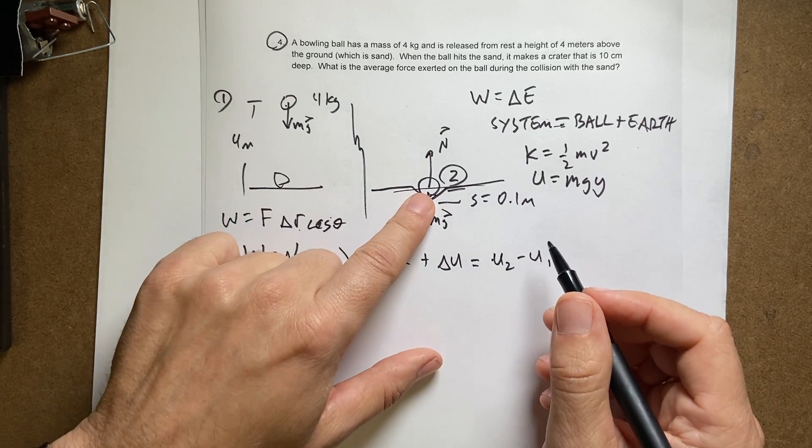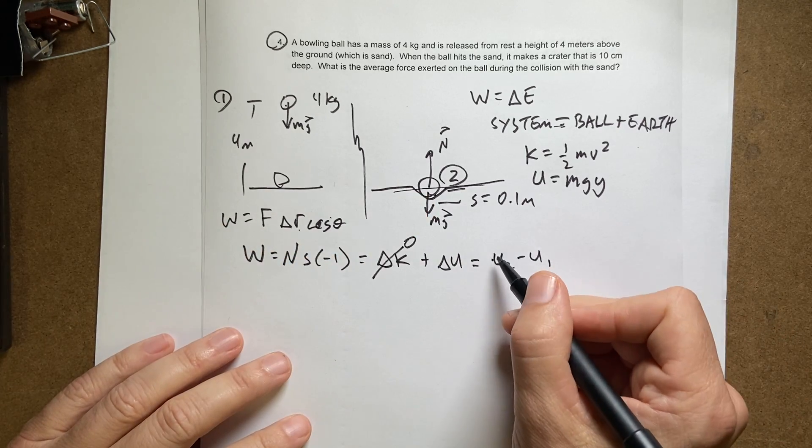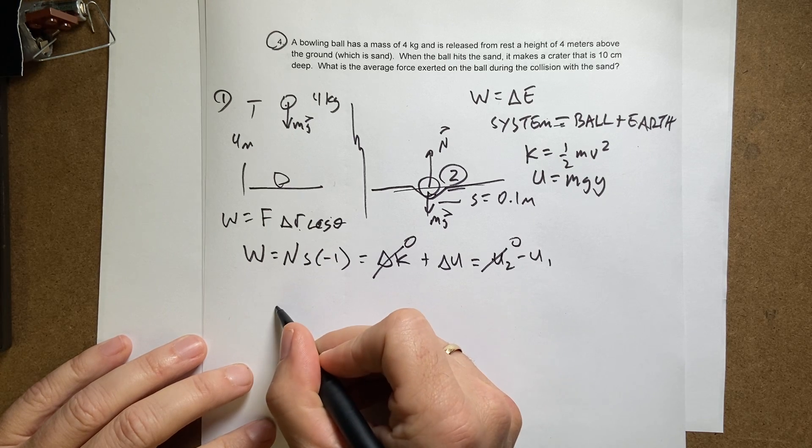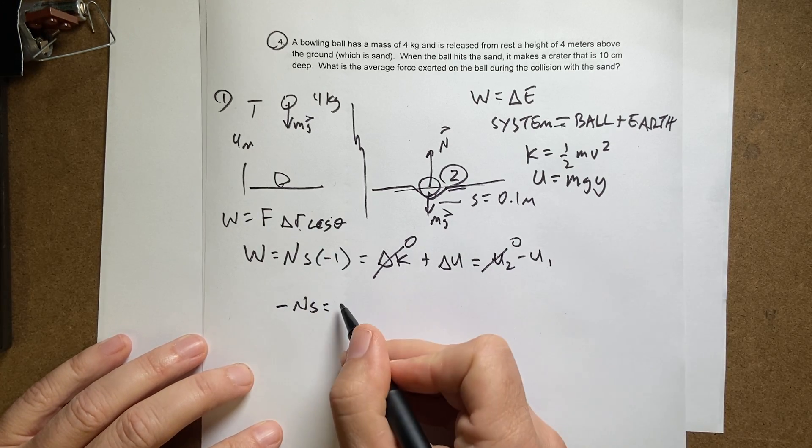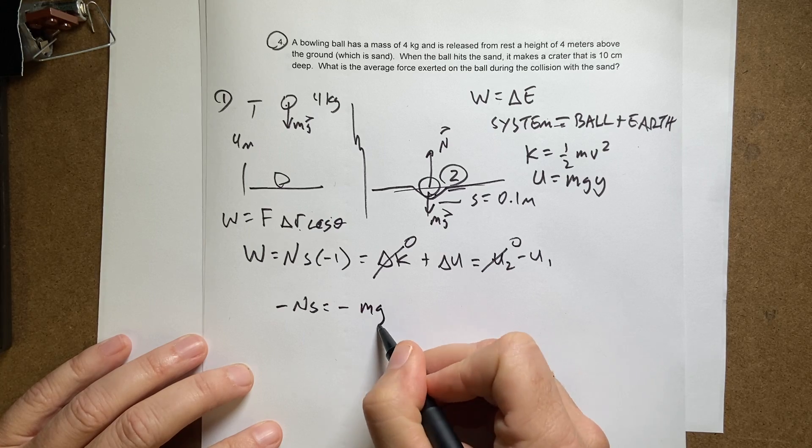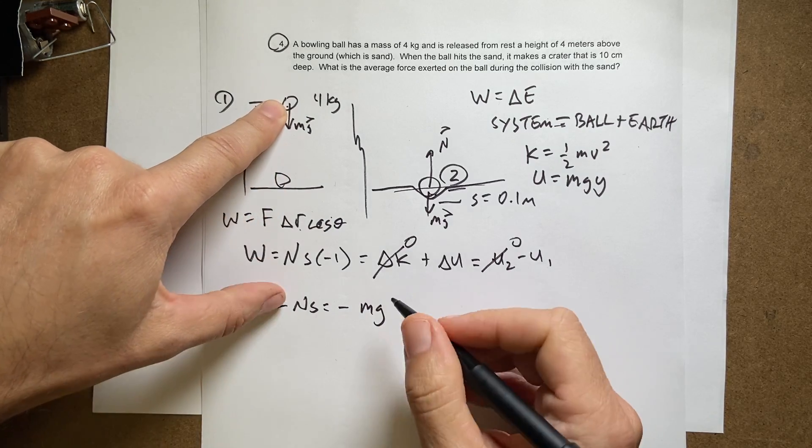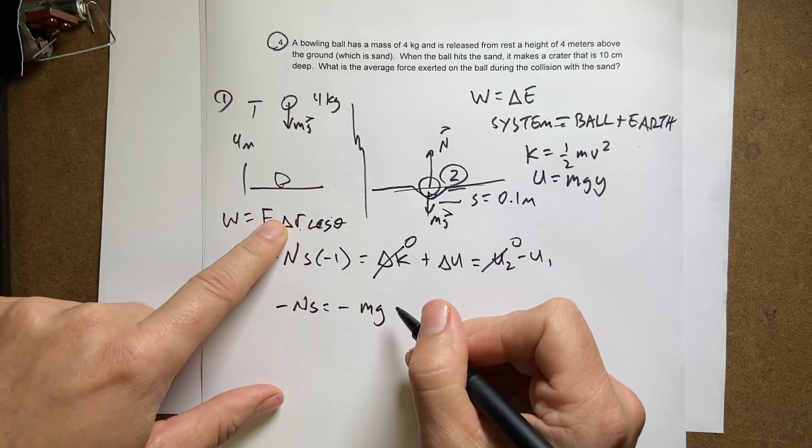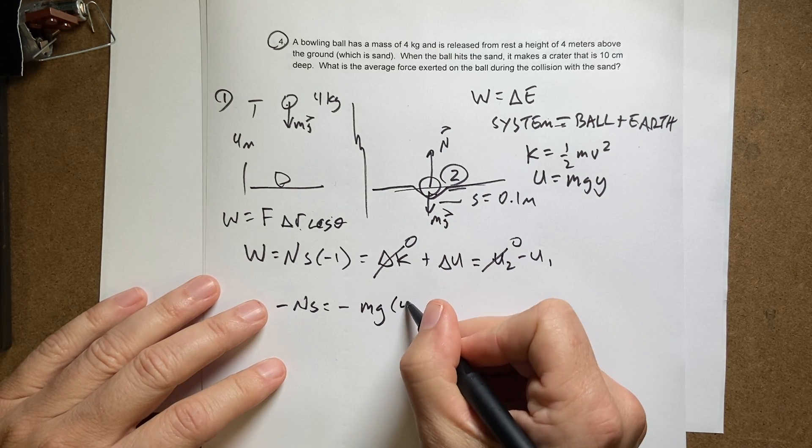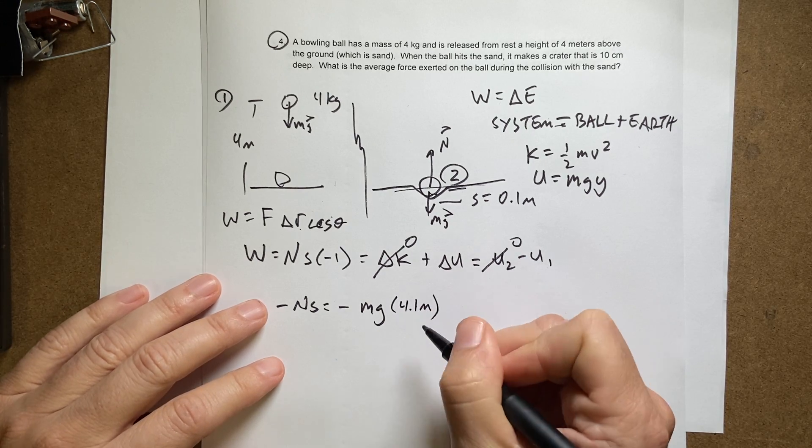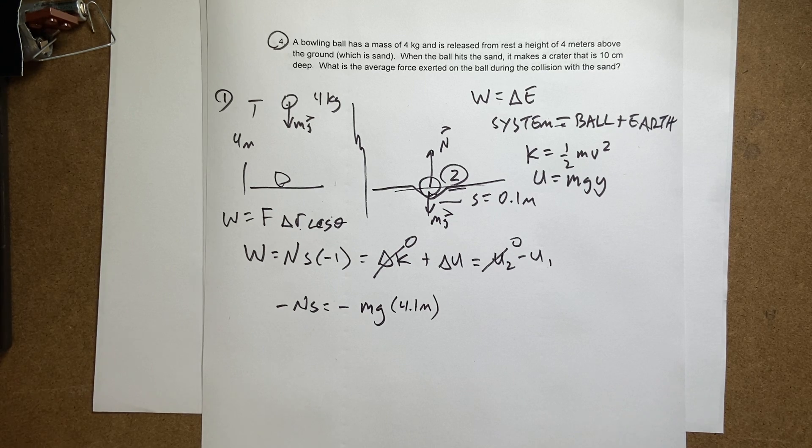So now I get negative N times S equals negative M times G. And now what's the starting Y value? It's actually going to be S plus this 4 meters, so I'm actually going to say 4.1 meters. If you just did 4, it's not going to change your answer that much and I would accept it as correct, even though it's technically not correct.